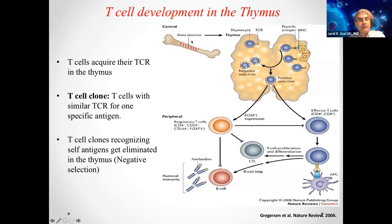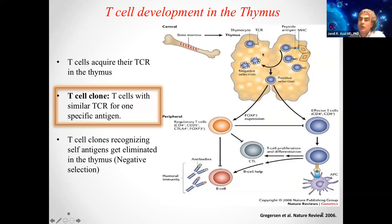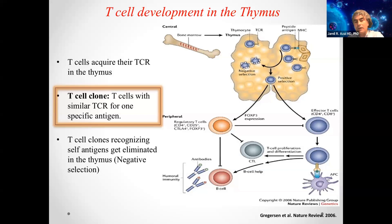T cells are special because they are generated in the bone marrow but mature in the thymus. They mature in the thymus by acquiring their T cell receptor. Every few T cells share one T cell receptor that recognizes only one antigen — this is called a clone of T cells. When we're born, we're born with a billion of those clones, each recognizing a specific antigen. If you have an infection, only the clone that recognizes a specific antigen from that infection gets activated; the rest remain at rest. The same thing happens in transplantation — not all billion clones go after the allograft, only those that recognize alloantigens on the graft get mobilized.